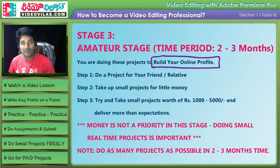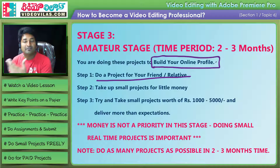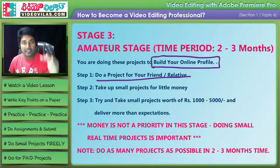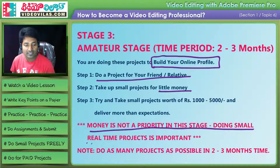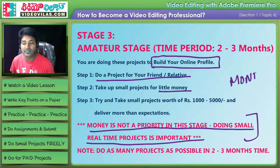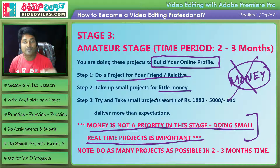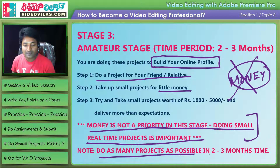Do projects for your friends or relatives — birthdays, weddings, events, personal interests. Take small projects for little money. Sometimes money is not a priority in this stage. Doing small real-time projects is what matters most. Do as many projects as possible in 2 to 3 months.